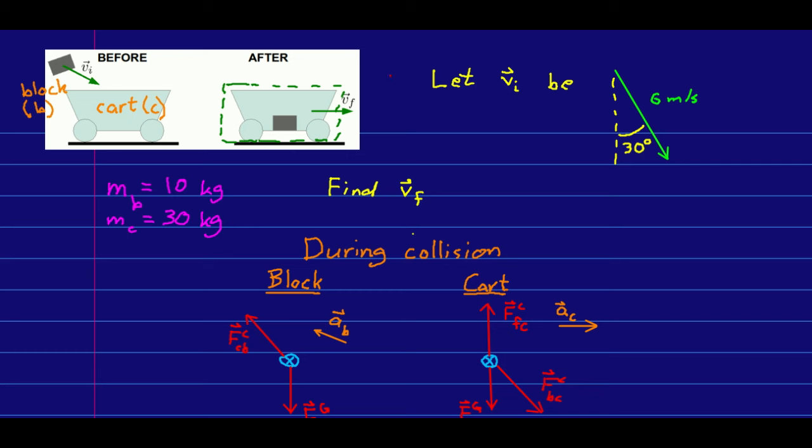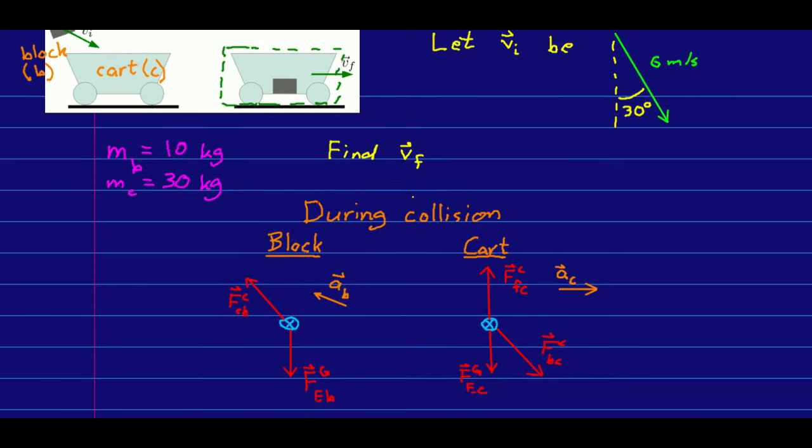So let's work an example to see some of these ideas. Here's a concrete block being thrown into a cart on wheels. And before it hits the cart, it's going at 6 meters per second at a 30 degree angle from the vertical like so. And after it's landed in the cart, the two are moving to the right together. So this is a totally inelastic collision.